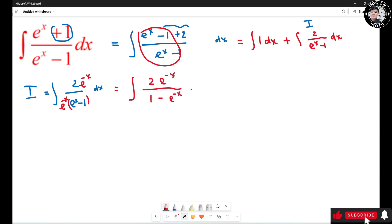Side note: observe that if I take the derivative of the bottom, 1 minus e to the negative x, I get e to the negative x dx. So I can replace this with the derivative.